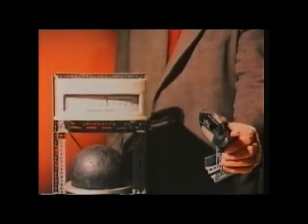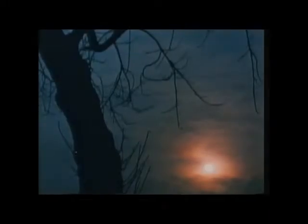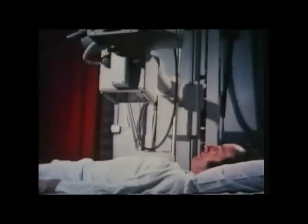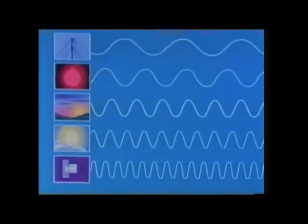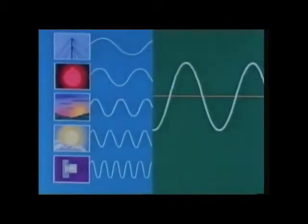Radiated heat can also be detected photographically using film sensitive to infrared rays. These rays are one example of a form of energy transmission called electromagnetic radiation. The other examples are light rays, radio waves, X-rays, and the ultraviolet rays that produce your suntan. The only way in which these various electromagnetic rays differ from each other is in their wavelength, and this difference accounts for their very different properties.